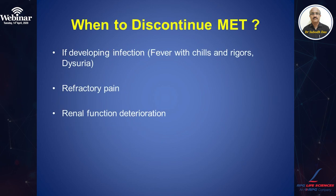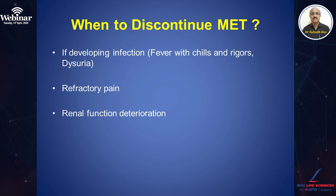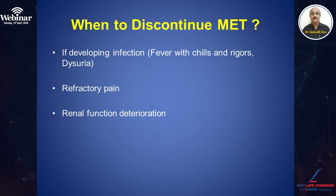When do you decide to discontinue medical expulsion therapy? If the patient is developing infection — fever with chills and rigors, burning on urination — you suspect infection and need to stop MET. Also, patients having refractory pain or a deteriorating renal function require stopping medical expulsion therapy.